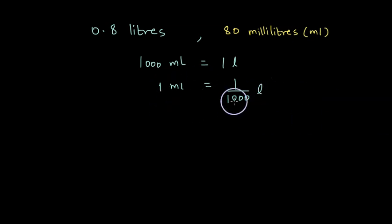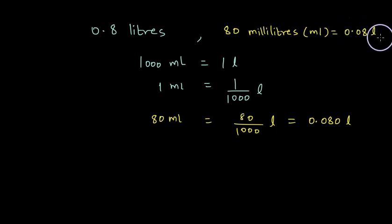And now if we multiply both sides by 80, we have 80 ml is equal to 80 divided by 1000 liter. 80 divided by 1000 can be written as 0.080 liter because 80 has the denominator 1000. Since we have 80 milliliters to be equal to 0.08 liters, we can compare it with the 0.8 liters.